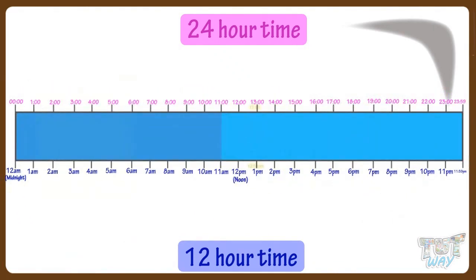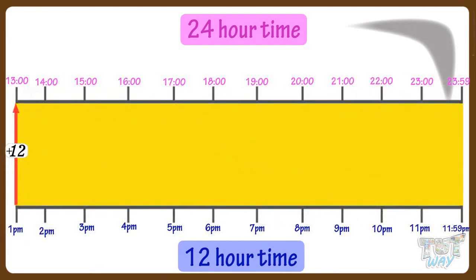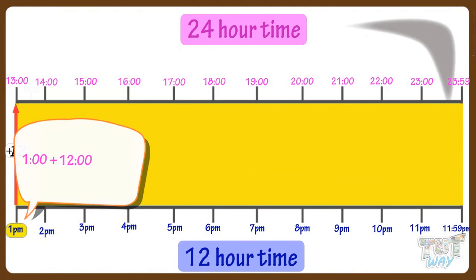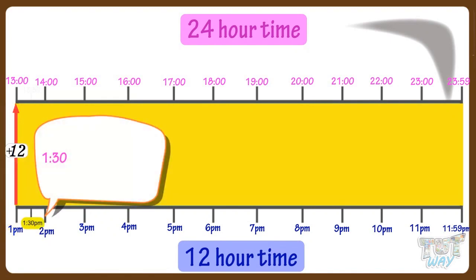Between 1 p.m. and 11:59 p.m., you add 12 hours to convert to the 24-hour clock system. If it's 1 p.m. and you want to convert, you add 12, giving you 13 — so it is 13 o'clock. Likewise, if it's 1:30 p.m., you add 12 and get 13:30.